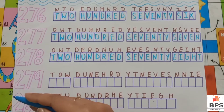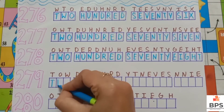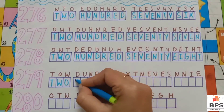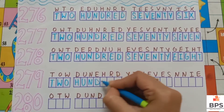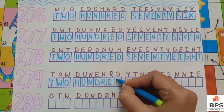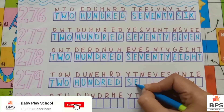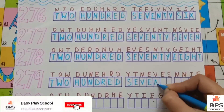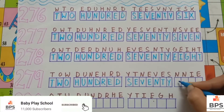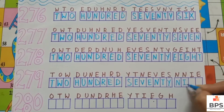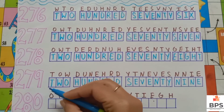279: T, W, O, 2, H, U, N, D, R, E, D, 100, S, E, V, E, N, T, Y, 70, N, I, N, E, 9. 279.